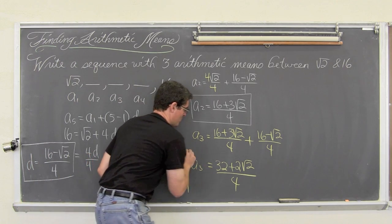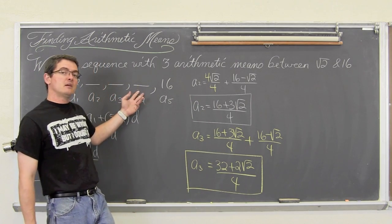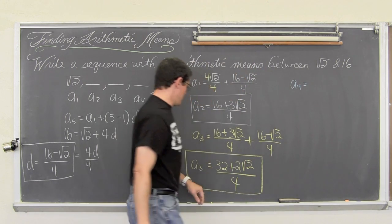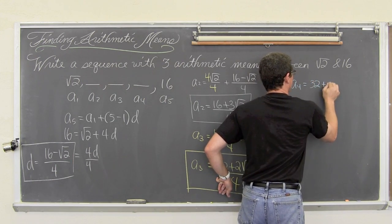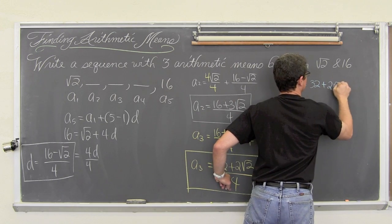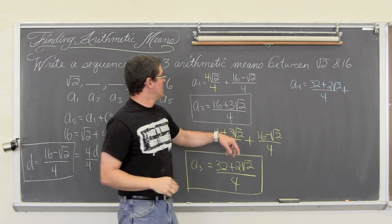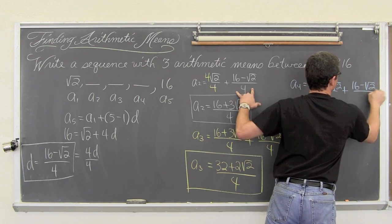I just have to do this one more time. a sub 4, because that is my last arithmetic mean I am looking for. a sub 4 is equal to a sub 3: 32 plus 2 square root of 2 over 4 plus again our common difference of 16 minus square root of 2 over 4.